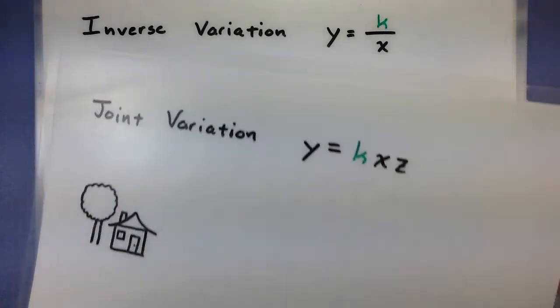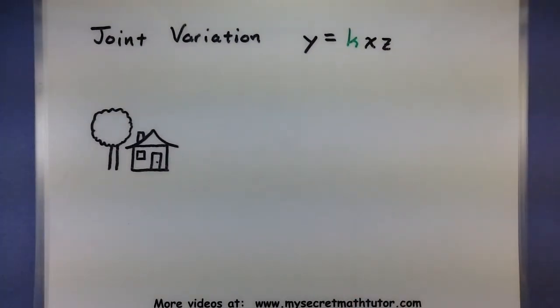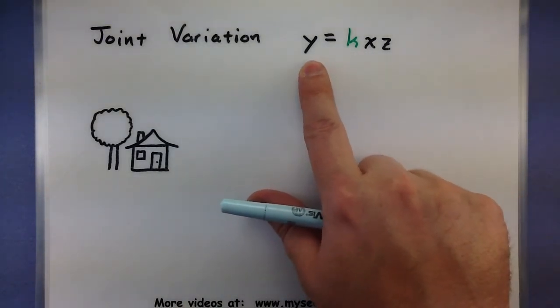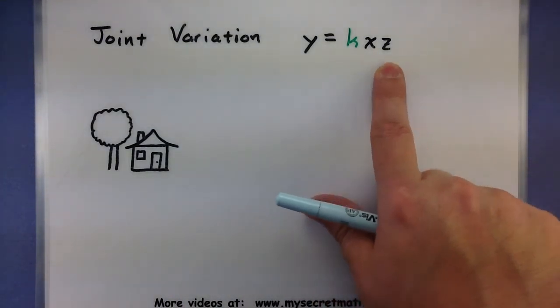Alright, on to another basic type. Joint variation. Joint variation in many ways is a lot like direct variation, only we're doing it with more than just two variables. So y varies directly with x and with z.